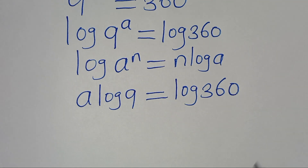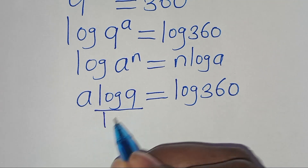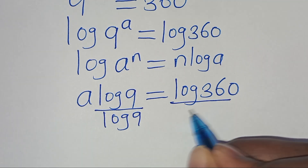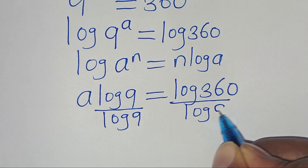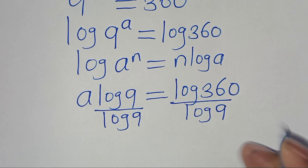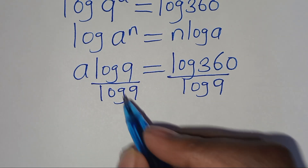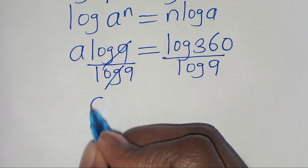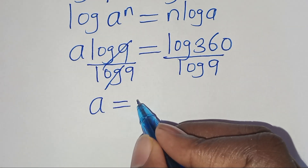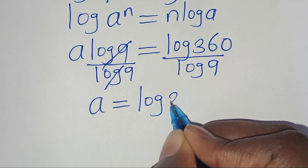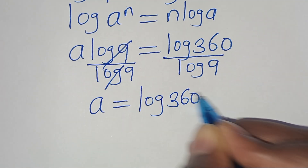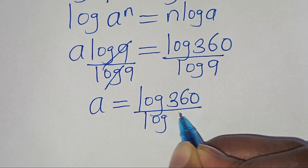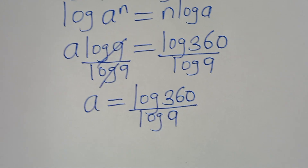The next step is to divide both sides by log 9, and also here by log 9. By simplifying, this implies that a is equal to log 360 divided by log 9.